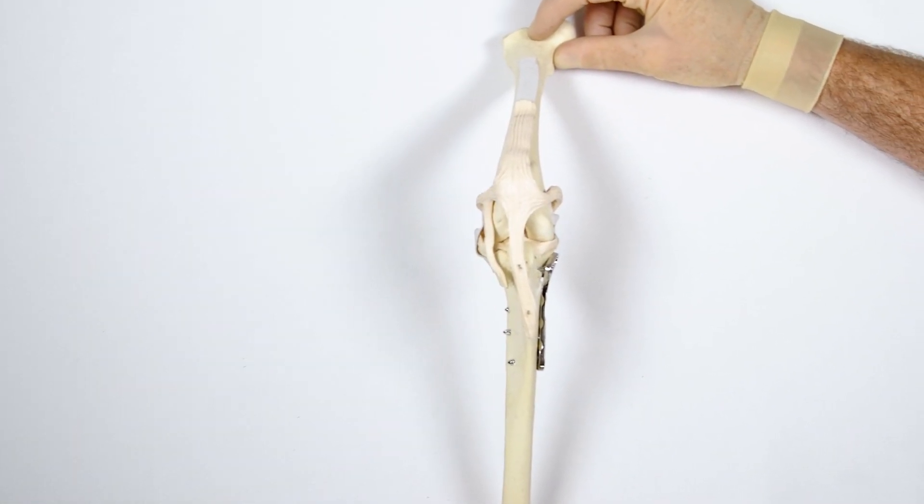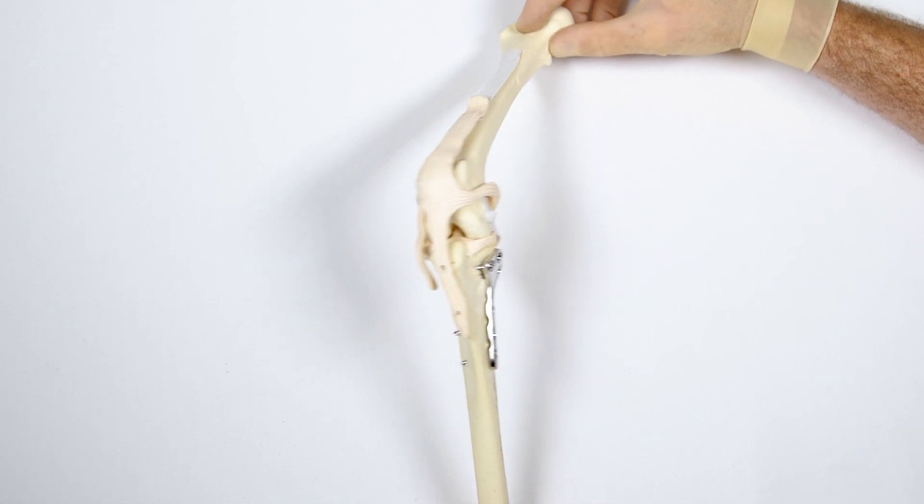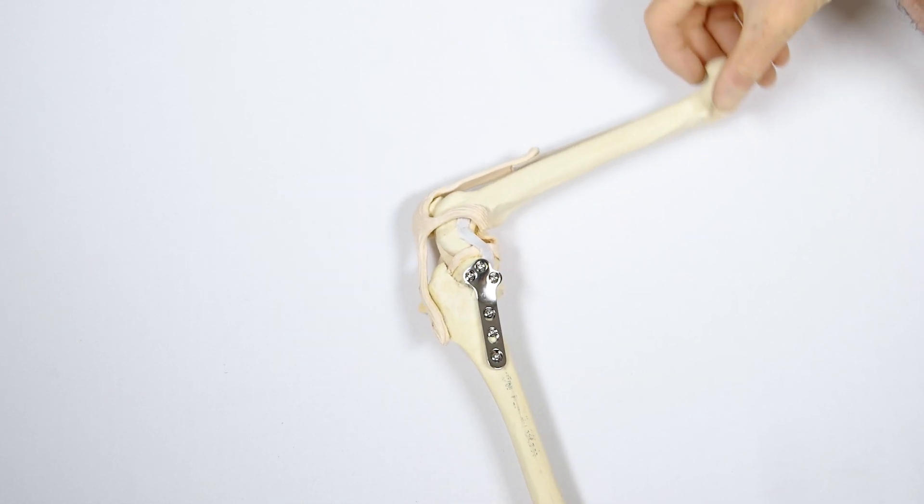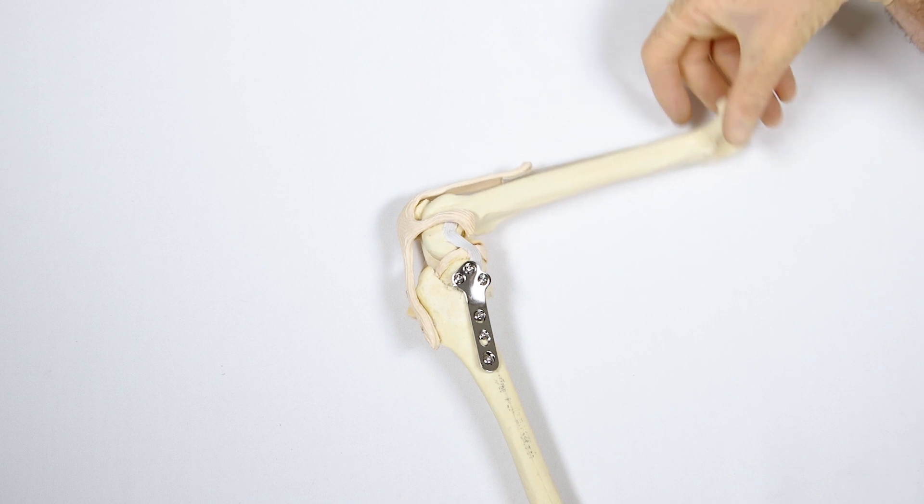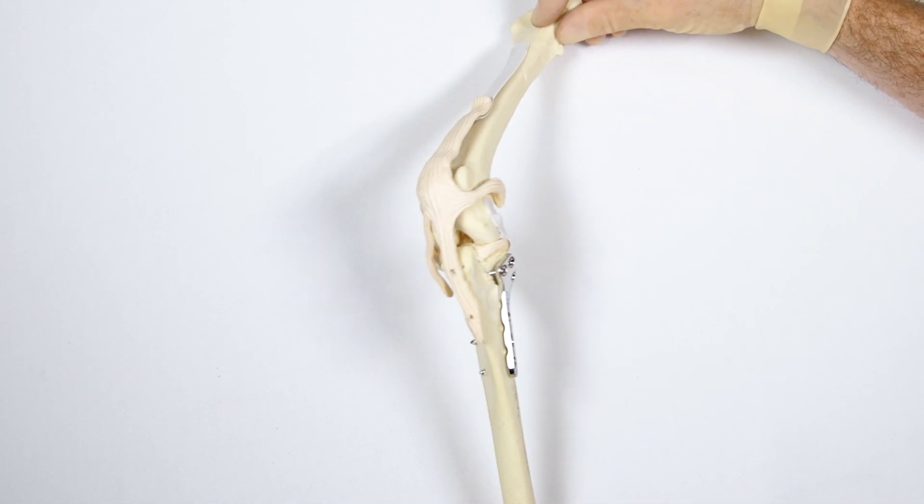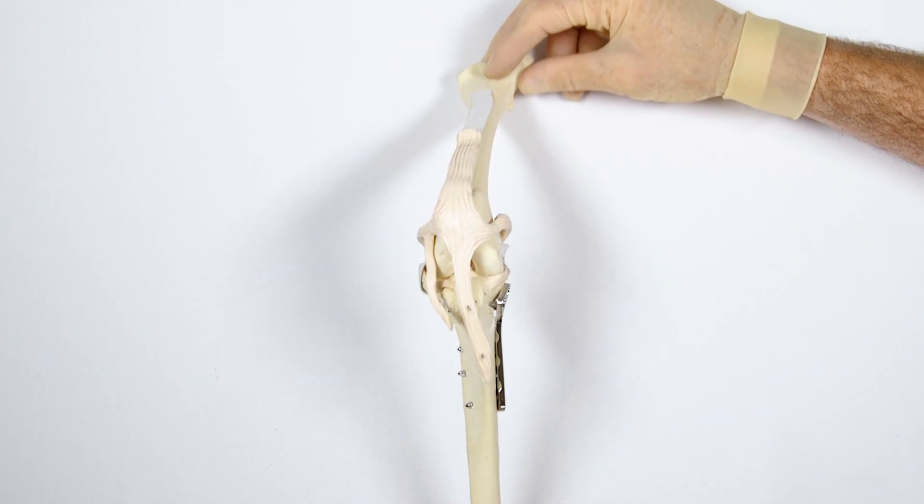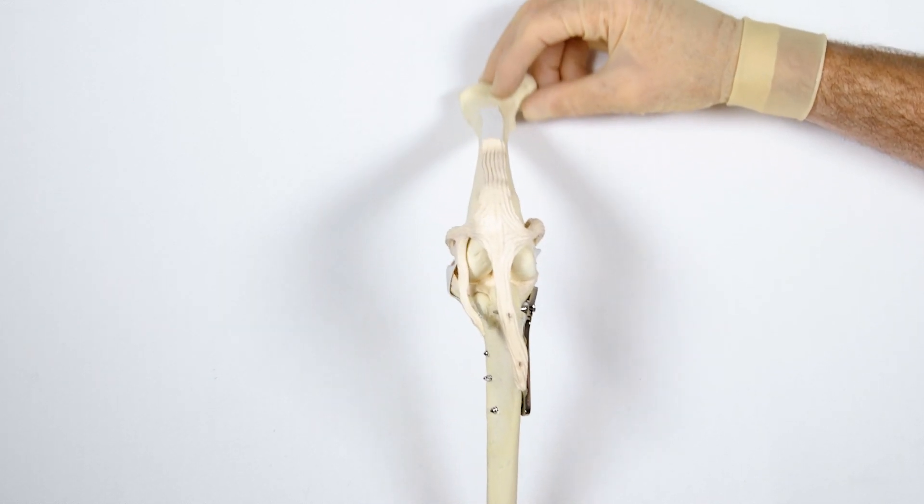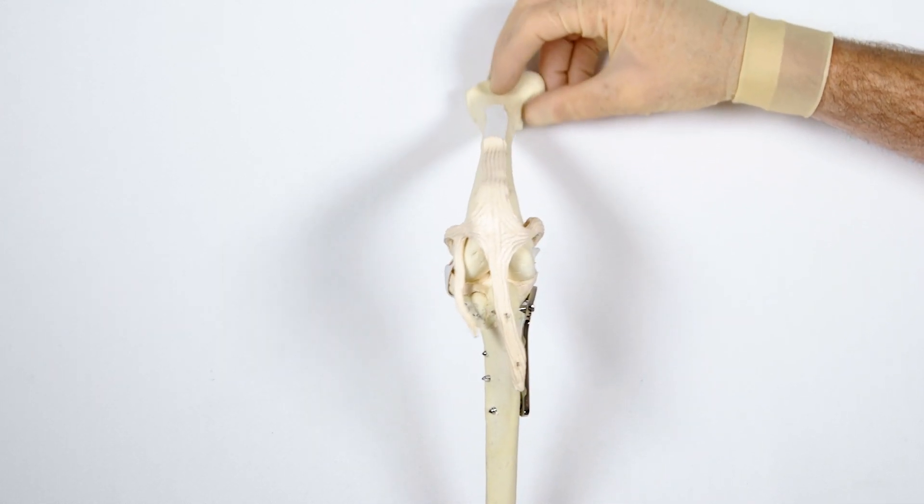Following plate placement, limb alignment, range of joint motion and patellar tracking must all be checked prior to closure of the joint capsule and routine surgical closure. Cranial tibial thrust should be negative but cranial draw will still be positive.